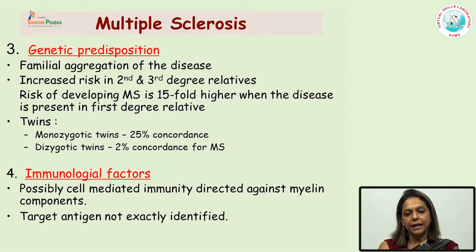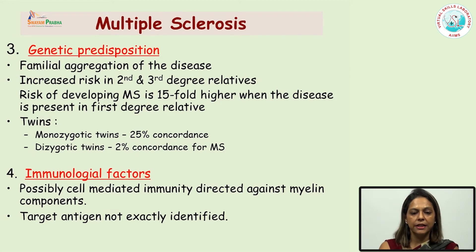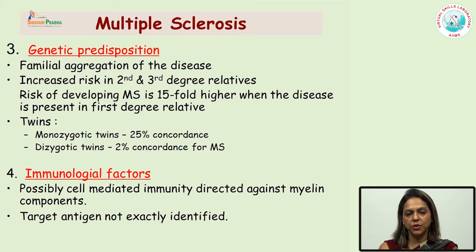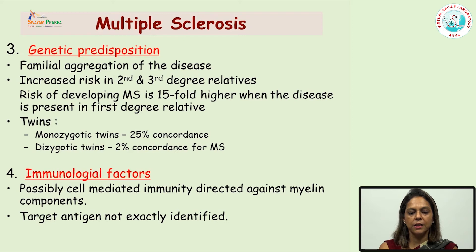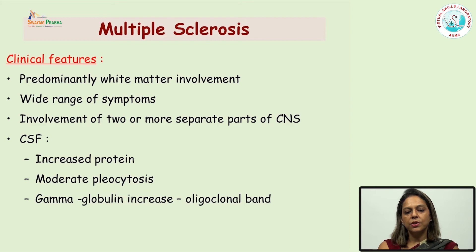There have been reports of familial aggregation of the disease, with increased risk in second and third degree relatives, and in monozygotic twins the risk of concordance is as high as 25%. So, genetic predisposition has been seen in patients with multiple sclerosis. The fourth factor is immunological: there is a possible role of cell-mediated immunity in these patients. Clinically, the disease occurs dominantly in the white matter, so patients can present with a wide range of symptoms, and at any given time there can be involvement of two or more separate areas of the CNS.